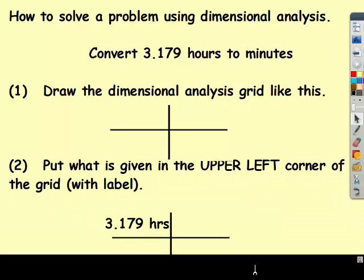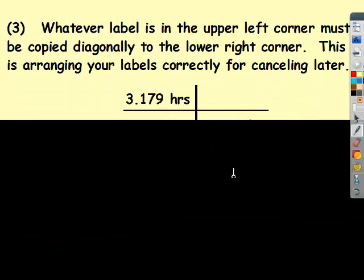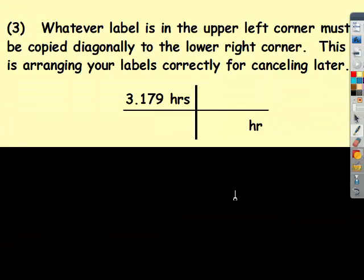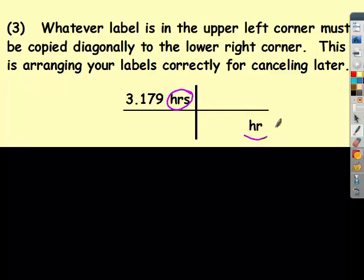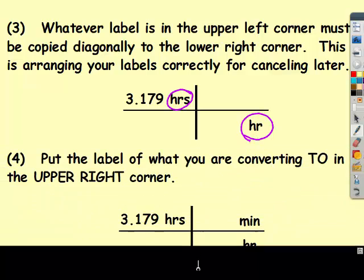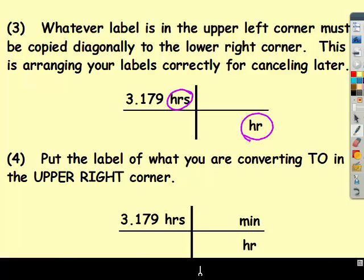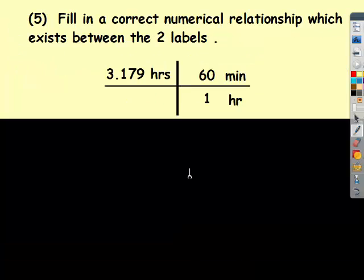You first set up a dimensional analysis grid like so. Then whatever was given with the unit goes in the upper left corner. We were given 3.179 hours. Whatever unit was given always goes in the bottom right so they can cancel out. The unit that you're converting to goes on top. Notice my hours will cancel out, leaving me with minutes.